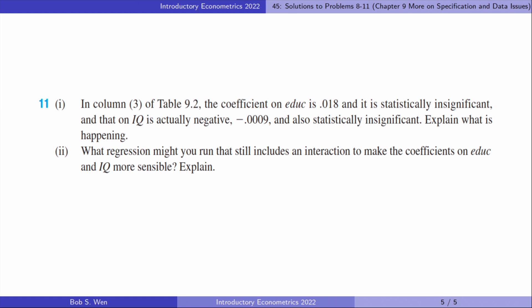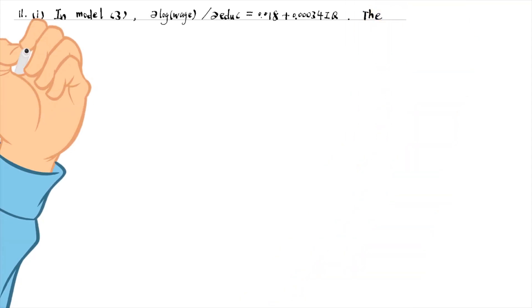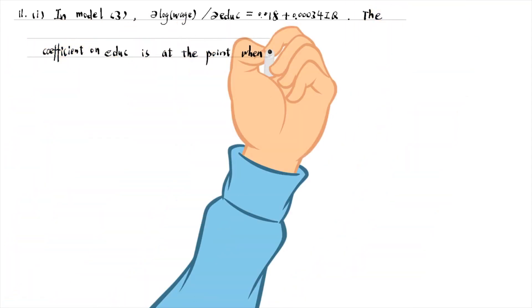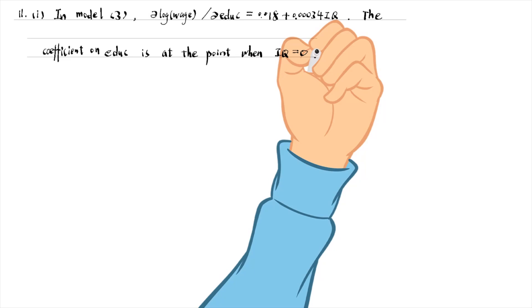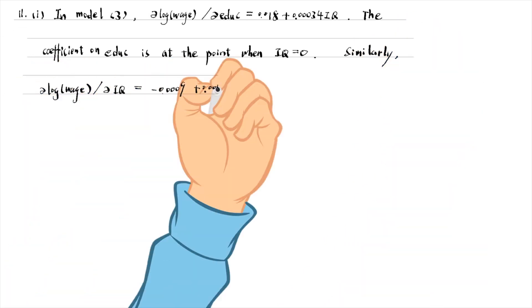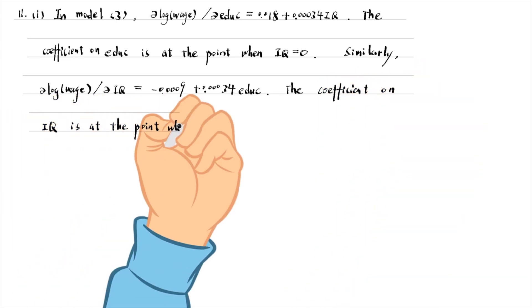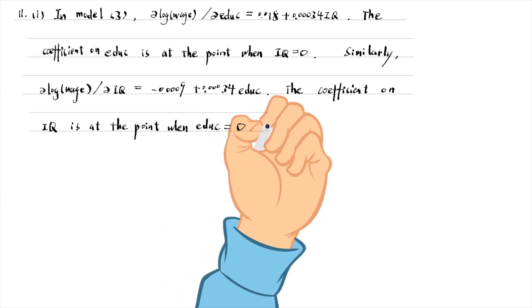Let's solve the last problem. In column 3, we add the interaction term between education and IQ to the model. The partial effect of education on the log wage is a function of IQ. The coefficient on education is at the point when IQ equals 0, which is impossible and not in the sample. Similarly, the partial effect of IQ on the log wage is a function of education. The coefficient on IQ is at the point when education is 0, which is not in the sample either. That is why the estimates are weird and insignificant.